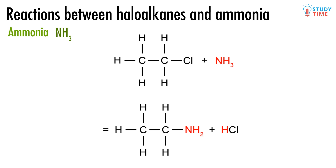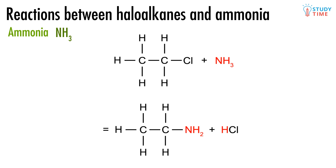One of the products of this is simply hydrogen chloride, often called hydrochloric acid. Because the chlorine branching group has been replaced with an amino group, the organic product is now referred to as aminoethane.